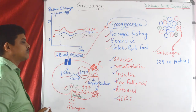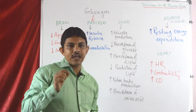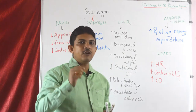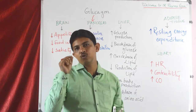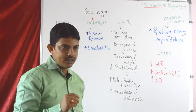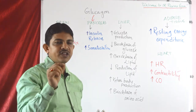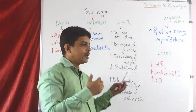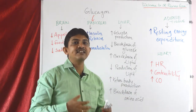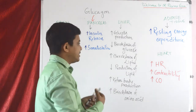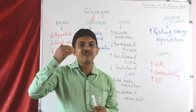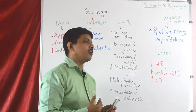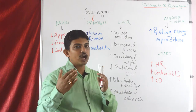Glucagon is majorly involved in carbohydrate and lipid metabolism. It opposes the action of insulin, increases blood sugar level, and reduces glycogen levels. In lipid metabolism, glucagon increases the level of free fatty acids in blood.